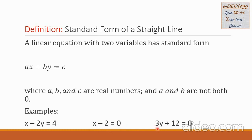Another example is 3Y plus 12 equals 0. In here, there is no X variable, so the value of A is 0. The value of B is 3, which is the coefficient of Y. This constant 12 can be transposed on the right side and the sign must be changed, so the value of C is negative 12.